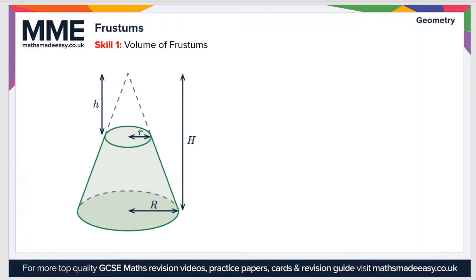Welcome to the Maths Made Easy tutorial on frustums. In this video we'll be looking at how to calculate the volume of frustums. But first, let's define what a frustum actually is. A frustum is the shape that's left behind when you remove the top section of a cone or a pyramid. So this green shape here is a frustum.